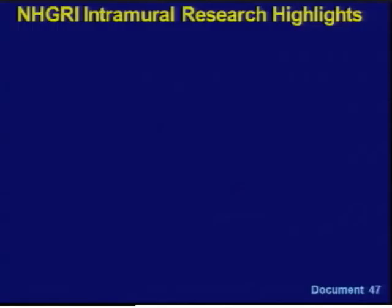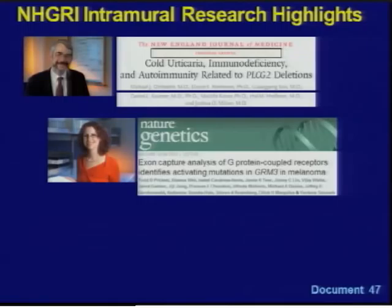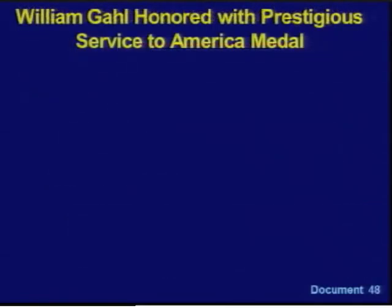Recent research highlights from NHGRI's intramural program include: Dan Kastner and colleagues published a New England Journal of Medicine study identifying the genetic mutation that causes cold temperatures to trigger allergic reactions (cold urticaria), pointing toward a potential cure and providing new insights into immune system function. Yardena Samuels and an NIH-led team studying the genetics of melanoma reported a new gene implicated in melanoma pathogenesis in Nature Genetics. Les Biesecker and colleagues published a paper in the American Journal of Human Genetics reporting the use of next-generation genome sequencing to identify a gene mutated in paroxysmal nocturnal hemoglobinuria, a pediatric condition.